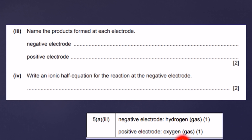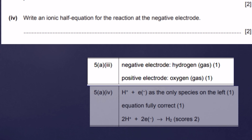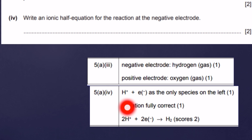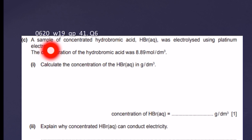Question 4: write an ionic half equation for the reaction at the negative electrode. Hydrogen ions are discharged at the negative electrode and get reduced. The fully correct equation for two marks is: 2H⁺ + 2e⁻ → H₂. Two hydrogen ions accept two electrons and become hydrogen gas as a molecule.